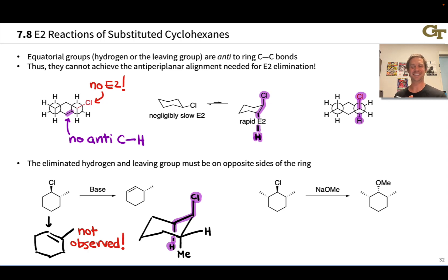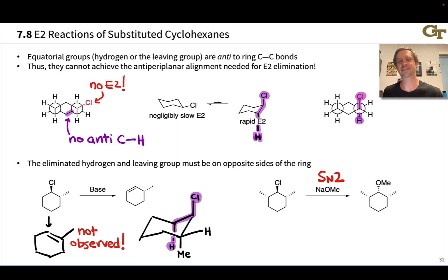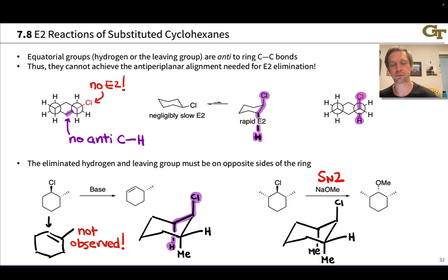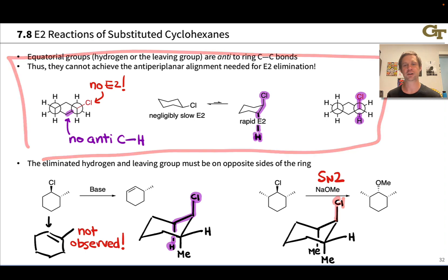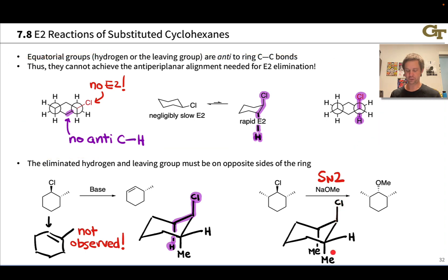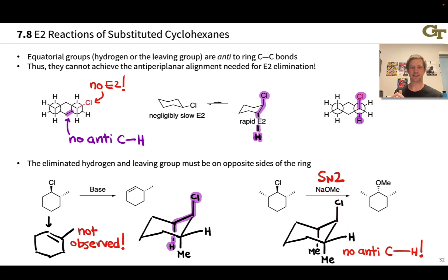The next case is really interesting: we have a relatively sterically crowded secondary alkyl halide in the presence of a strong, unhindered base, methoxide, and yet we do not observe E2 elimination — instead we observe SN2 substitution with inversion of configuration. The chair conformation explains this: drawing the chair conformer with the C–Cl bond axial, we find that anti to the chlorine at both neighboring carbons are methyl groups, not hydrogens. Both C–H bonds at those carbons are gauche to the C–Cl bond, so E2 elimination cannot take place because there is no anti C–H bond available.